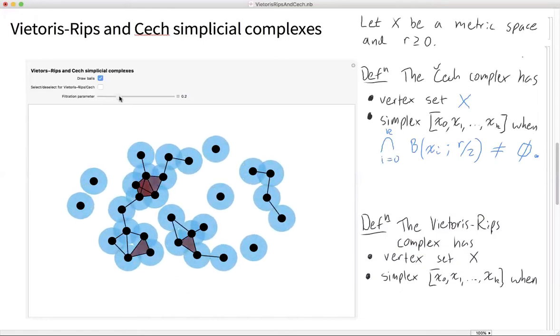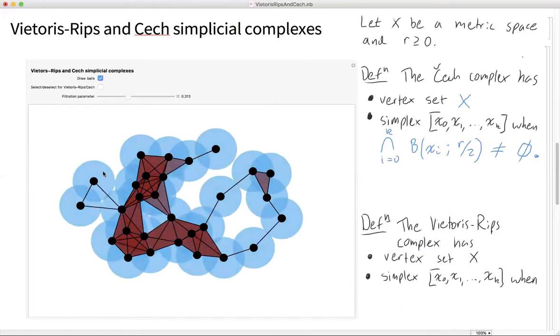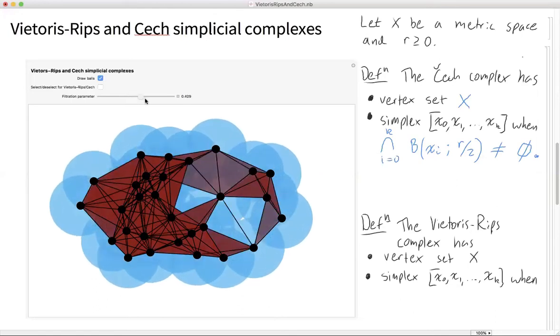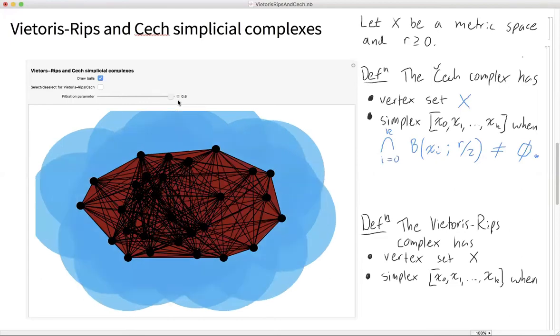The Čech complex keeps growing. And let's get to this stage right here where I have all pairwise intersections in this triangle. So I have all three edges of the triangle, but I don't have a point of triple intersection. So I don't have the two simplex. And you grow this all the way until eventually you get the complete simplex on all of your vertices.